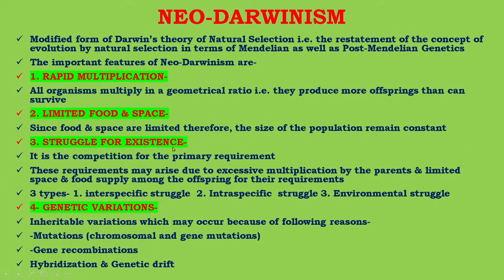Third is struggle for existence — that is the competition for primary requirements. These requirements may arise due to excessive multiplication by the parents and limited space and food supply. There are three types: first is inter-specific struggle, and number three, environmental struggle.